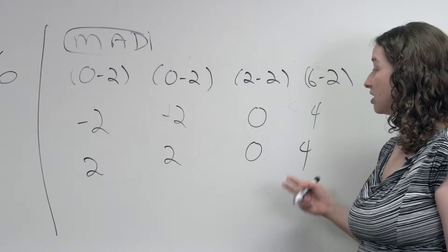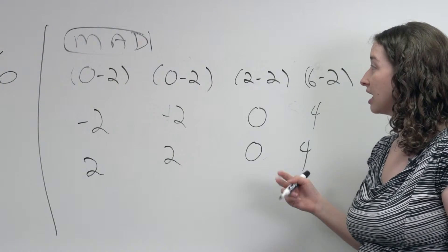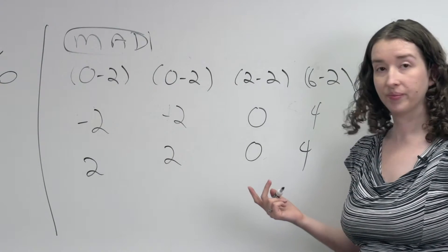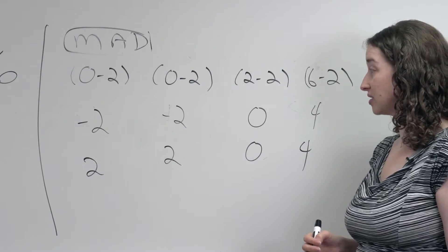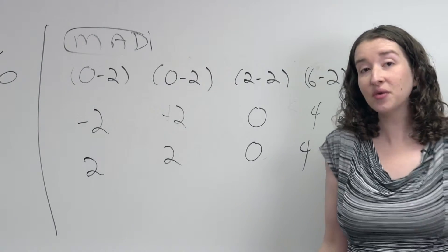So the mean absolute deviation here is 2, and the median absolute deviation was 1. And those are two different measures of dispersion that I could use. But if you have something else you'd rather do, that's okay.